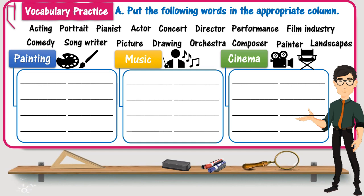Let us correct the task now. The first word is acting — it means performing on stage, in a movie or in a play — so the word is related to cinema. The second word is portrait, a picture usually representing the face of a person, related to painting. The next word is pianist, someone who plays the piano, so definitely related to music.